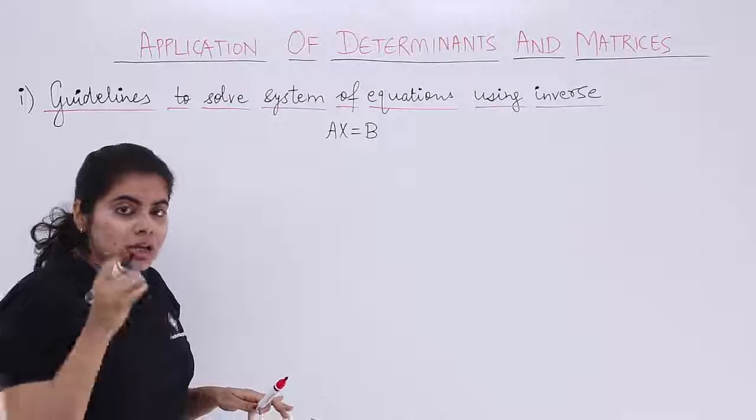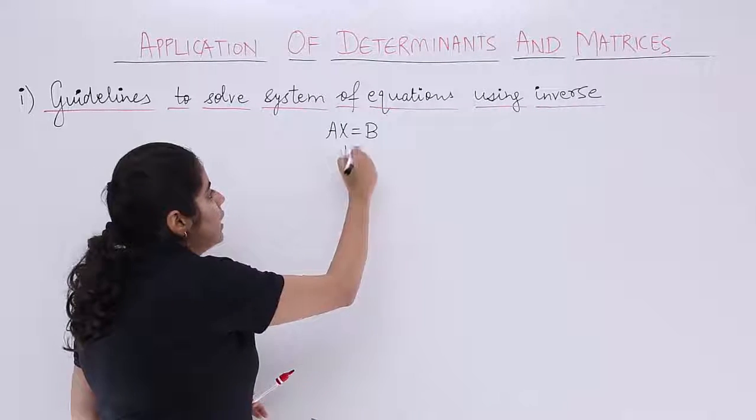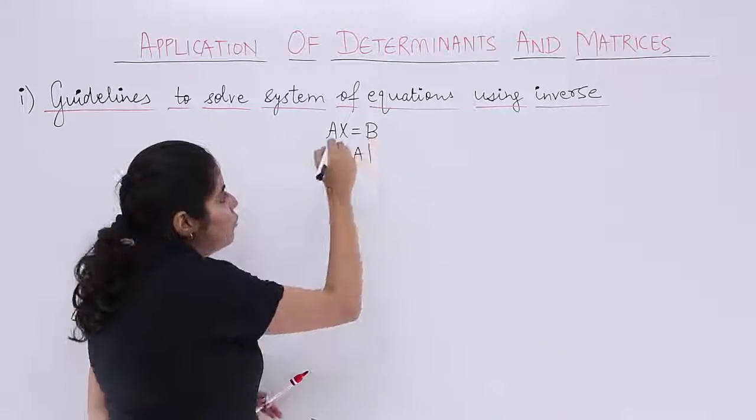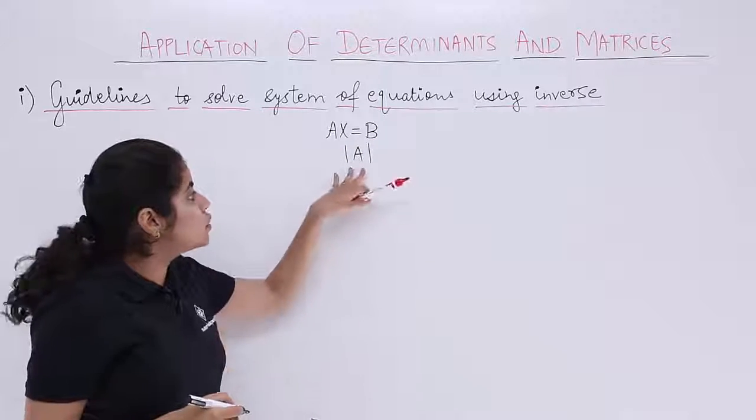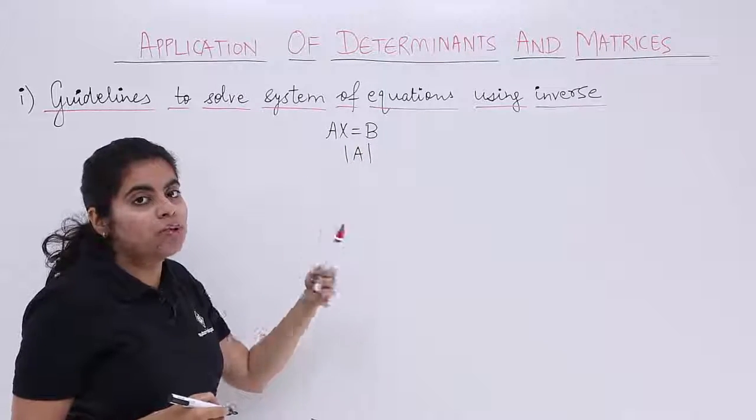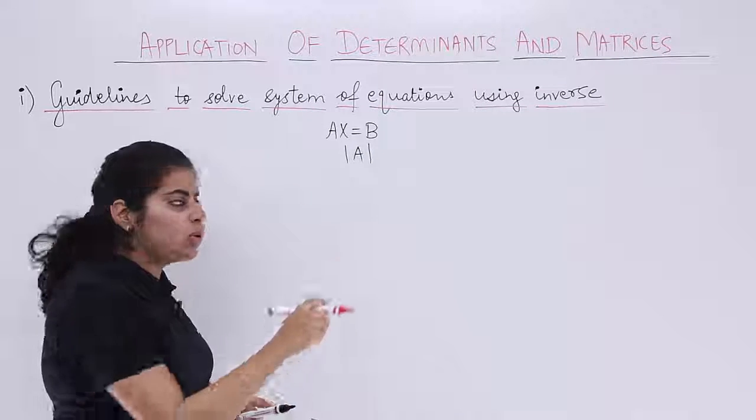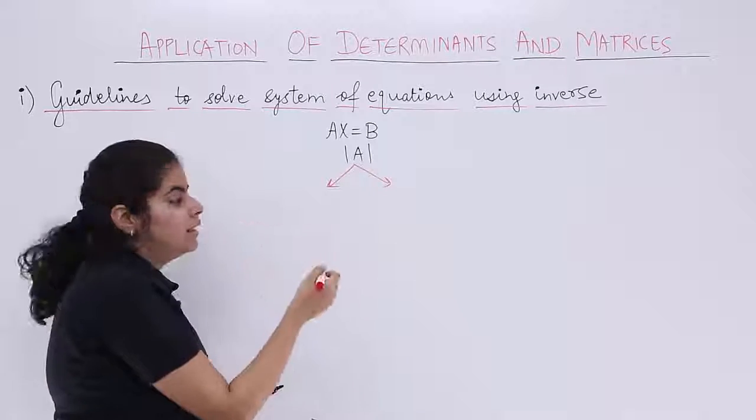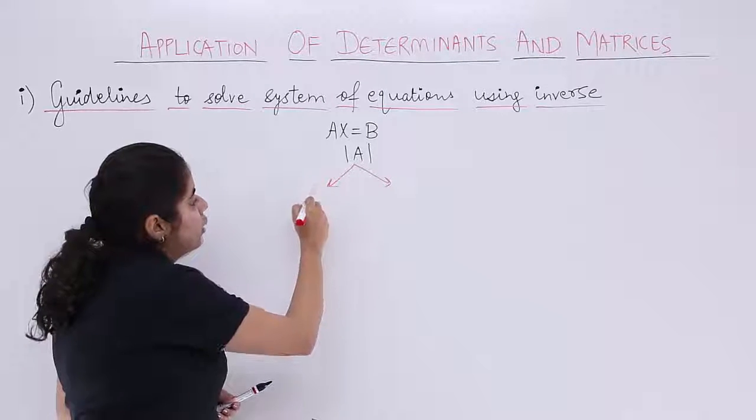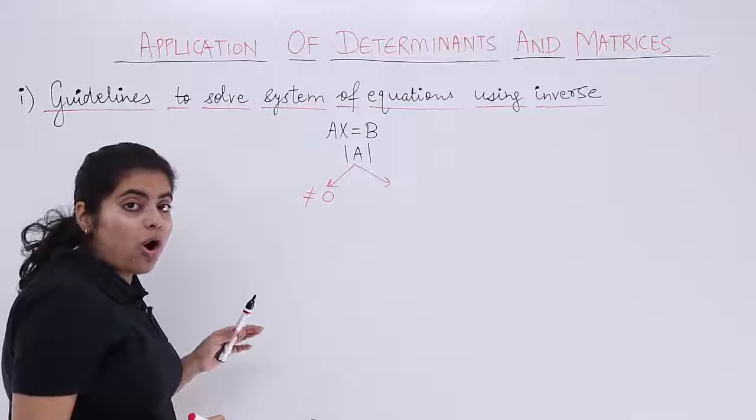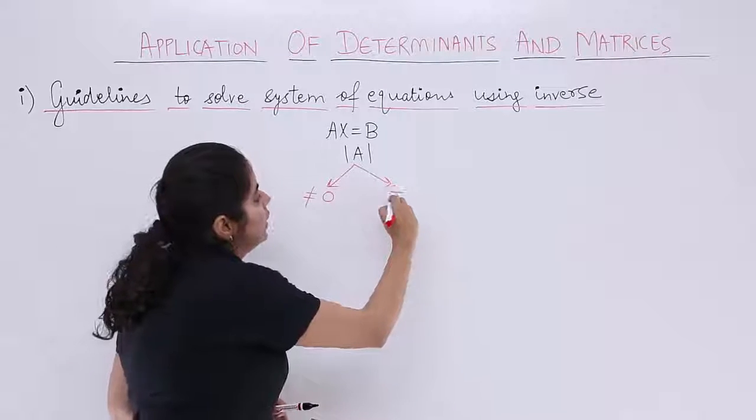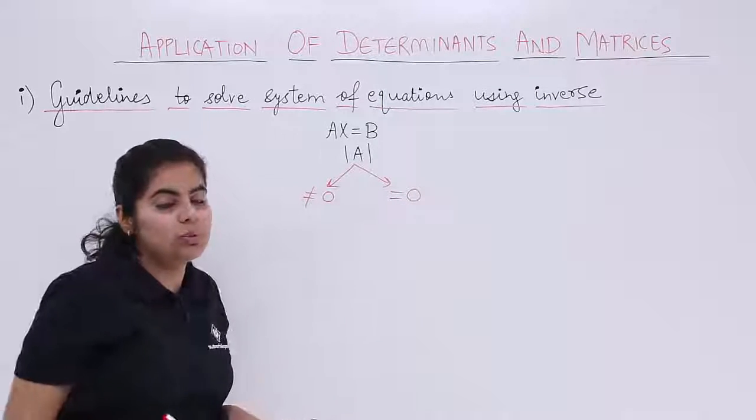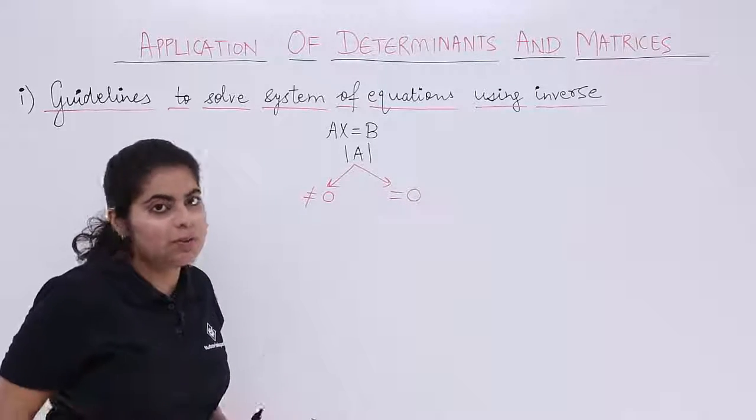Once you are done with this, your task is to find out determinant of A. Determinant of A means determinant of the coefficient matrix. Now two things are possible. Either the determinant value will not be 0 or the determinant value will be equal to 0. Two cases are only possible.